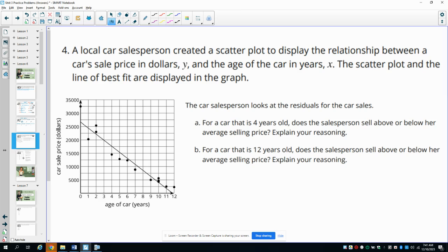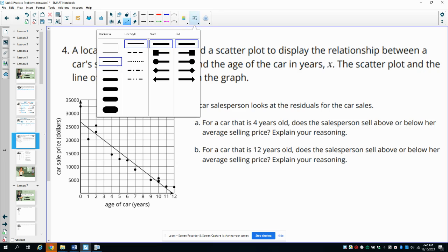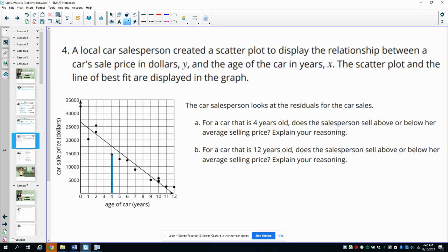Number 4, a local car salesperson created a scatter plot to display the relationship between the car's sale price in dollars and the age of the car. The data points are the actual sales prices that this car salesperson sold cars for. For the car that is 4 years old, did the salesperson sell it above or below the average sale price? So here is 4, here's the data point. And this one is below the line. This line would be the average sales price, the line of best fit. And this dot here for 4 years is below that.